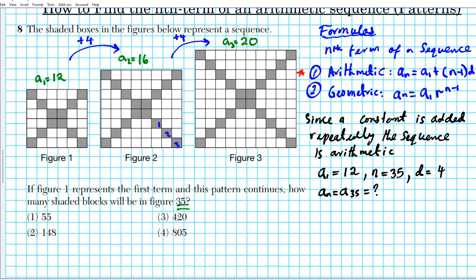Let's go ahead and plug it in. a₃₅ = 12 + (35-1) × 4. We're going to use PEMDAS to simplify the right side of this equation. Simplify the parenthesis first: 35 - 1 = 34. Now we have multiplication - PEMDAS says multiply before you add. So 12 + 34 × 4. 34 × 4 = 136. 136 + 12 = 148. So the answer to question number 8 is option 2: 148 shaded boxes for figure 35.